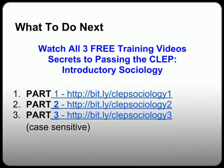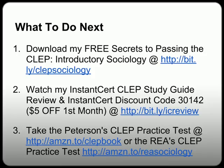What to do next: If you haven't already done so, you're going to want to watch all three parts in the video training series Secrets to Passing the CLEP Introductory Sociology at bit.ly/CLEPSociology1, 2, or 3 — case sensitive, all lower case. Three important links: Number one, download my free Secrets to Passing the CLEP Introductory Sociology study guide at bit.ly/CLEPSociology. Number two, watch my InstantCert CLEP Study Guide Review at bit.ly/icreview and use discount code 30142 for $5 off your first month. Number three, when you finish your studies, take one of the practice tests — you can find some at amzn.to/clepbook or amzn.to/threeofsociology.